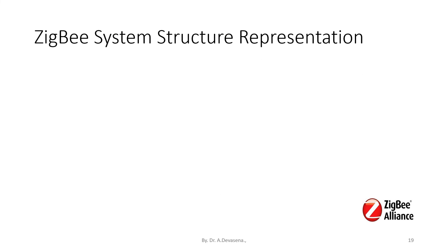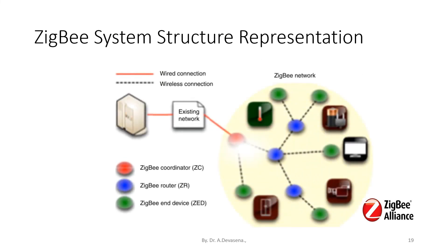The Zigbee system structure is shown here. In this system structure, the Zigbee coordinator is represented by the red color node, abbreviated as ZC. The blue color nodes represent the Zigbee router, abbreviated as ZR. The green color node represents the Zigbee end device, abbreviated as ZED. The red color lines indicate wired connections and dashed lines indicate wireless connections.